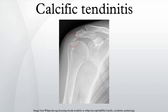Surgery: Removing the deposits, either with open shoulder surgery or arthroscopic surgery, are both difficult operations but with high success rates. About 10% require re-operation. If the deposit is large, the patient will frequently require a rotator cuff repair to fix the defect left in the tendon when the deposit is removed, or to re-attach the tendon to the bone if the deposit was at the tendon insertion into the bone.